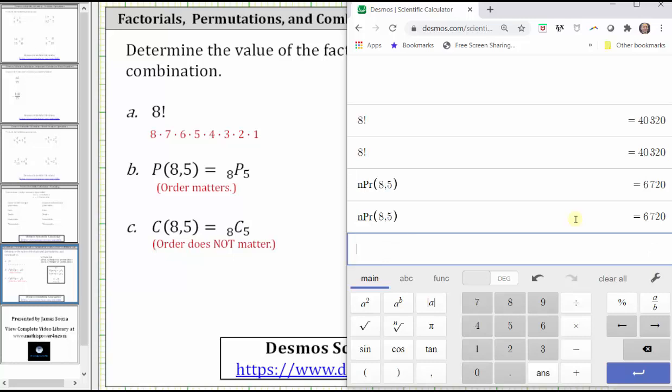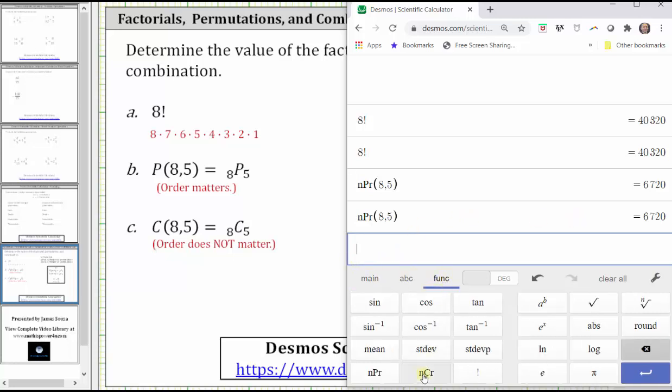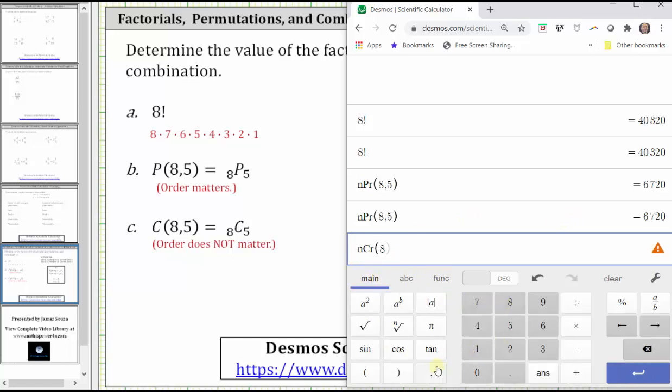And then finally we have eight choose five, or eight items chosen five at a time. Using the Desmos keypad, click functions, click NCR, go back to the main keypad, enter eight comma five, enter. Eight choose five is equal to 56.